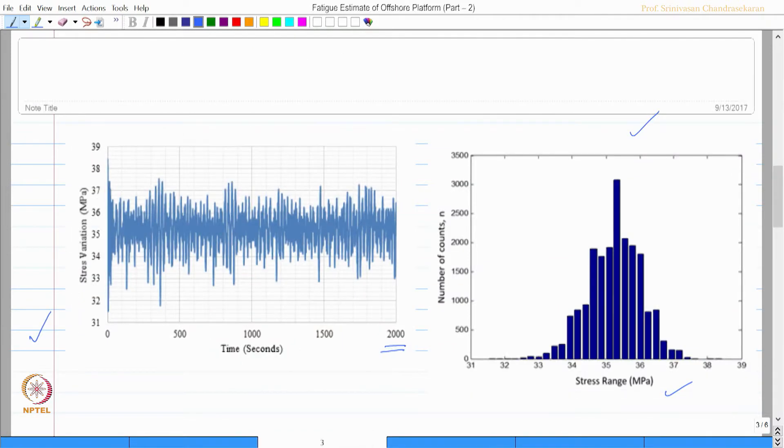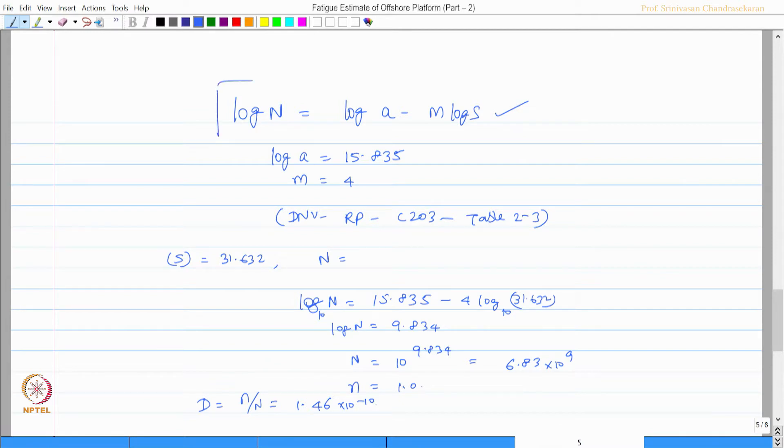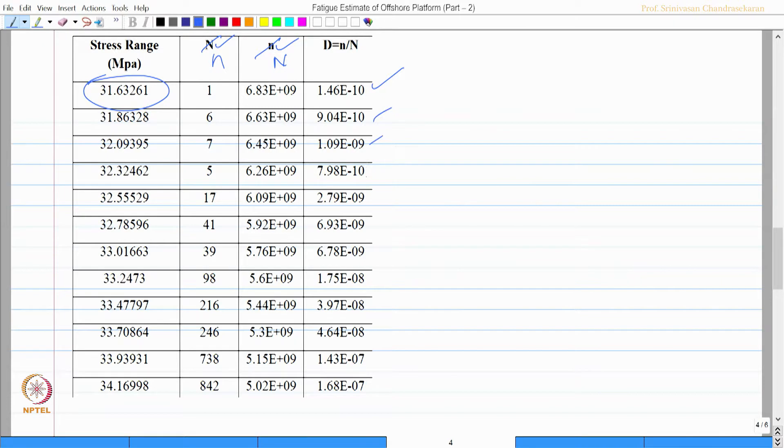Similarly, for various stress ranges similar n are calculated then capital N is calculated from this equation and d is estimated as you see from this table which is the same procedure what we had in the last example.